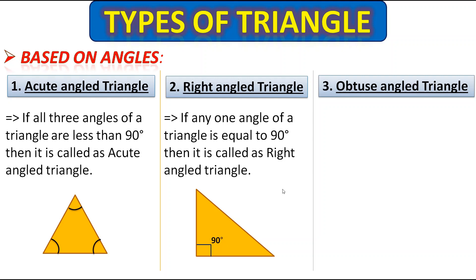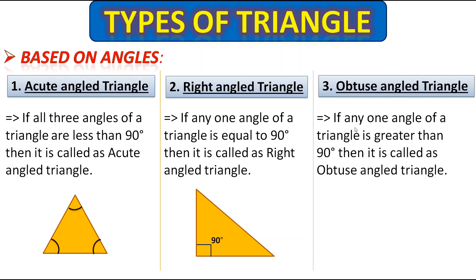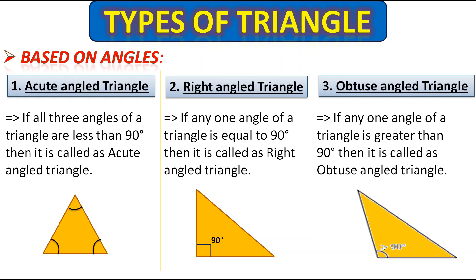Next comes the obtuse angle triangle. If any one angle of a triangle is greater than 90 degrees, that is an obtuse angle, then it is called an obtuse angle triangle. Here this angle is greater than 90 degrees, therefore this triangle is called an obtuse angle triangle.